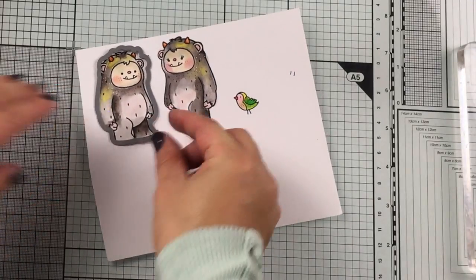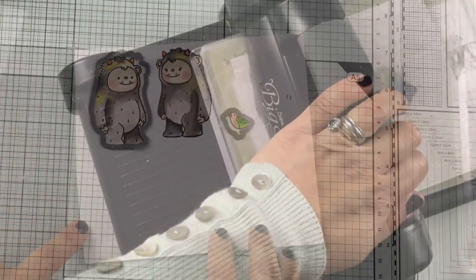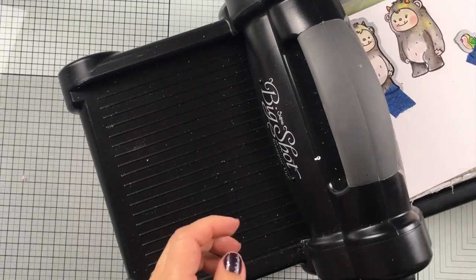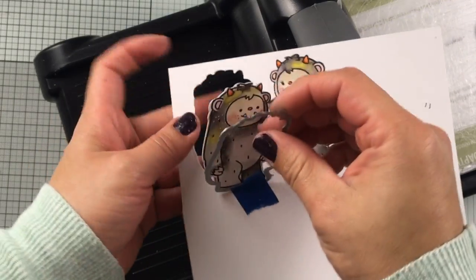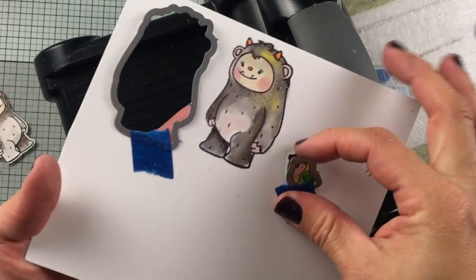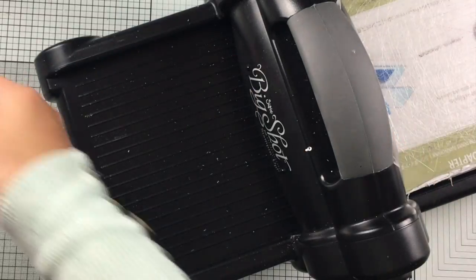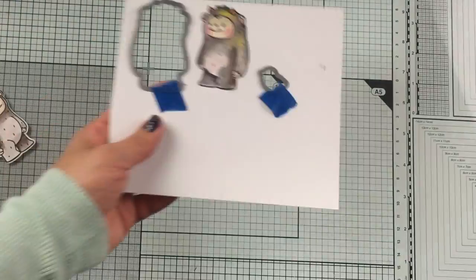Now I'm going to use the die to die cut the images. I'm going to show you how to die cut the mirror image as well using the same die.